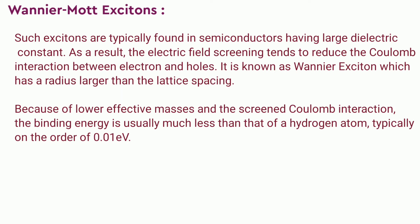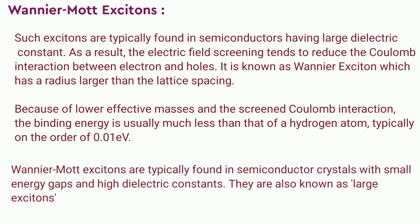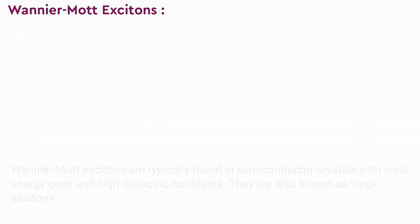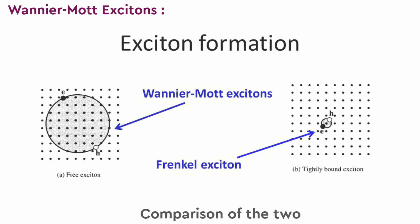Likewise, because of the lower masses and screened Coulomb interaction, the binding energy is usually much less than that of a hydrogen atom, typically on the order of 0.01 electron volt. This type of exciton was named for Gregory Wannier and Neville Francis Mott. Wannier-Mott excitons are typically found in semiconductors with small energy gap and high dielectric constant.